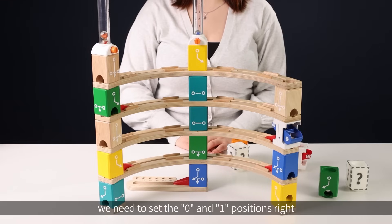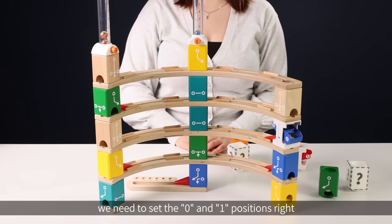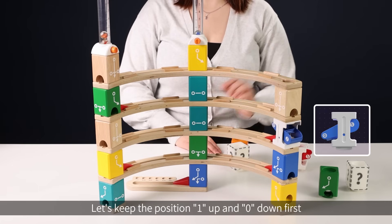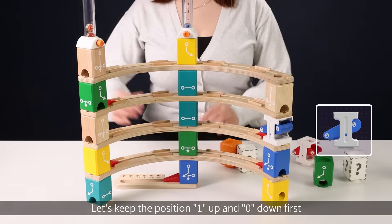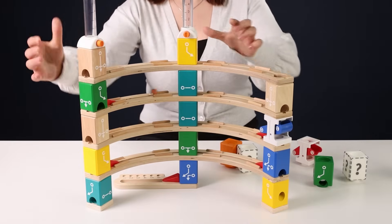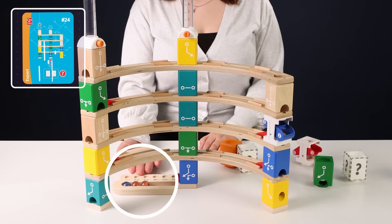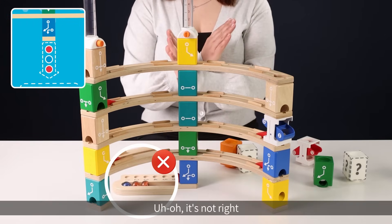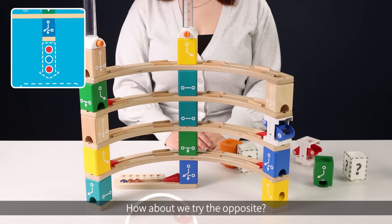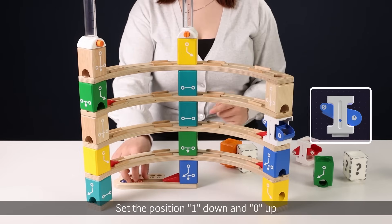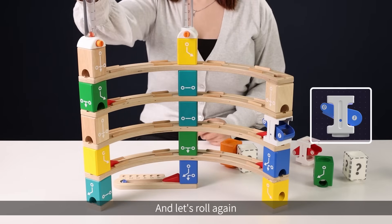Always remember we need to set the zero and one positions right. Let's keep the position one up and zero down first. Uh-oh, it's not right. How about we try the opposite. Set the position one down and zero up. And let's roll again.